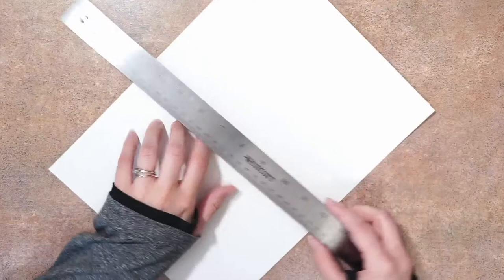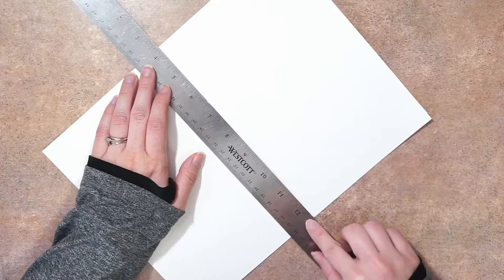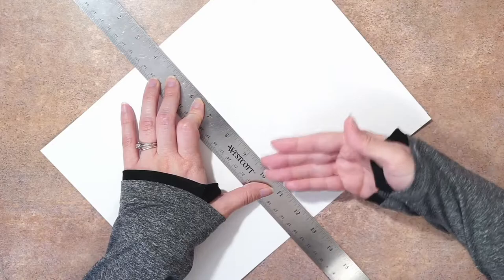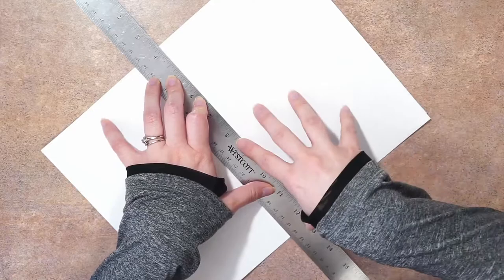Now what I'm going to do is line up my ruler onto the marks that I made, and I'm going to hold the ruler down with one hand pretty firmly. It really helps if your ruler has a non-slip bottom. This one has cork on the bottom, so it's helpful to keep it in place.